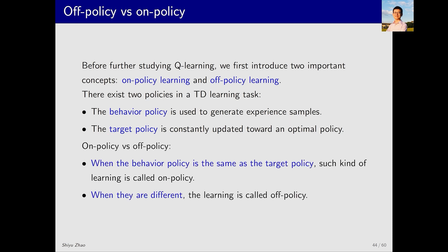Based on the behavior and target policies, we can categorize RL algorithms into two types: on-policy and off-policy. When the behavior policy is the same as the target policy, the algorithm is called on-policy — a policy interacts with the environment, gathers experience, and is improved upon iteratively. Off-policy algorithms occur when the behavior policy and target policy are different: one policy gathers extensive experience samples, which are used to improve another policy that converges to the optimal.